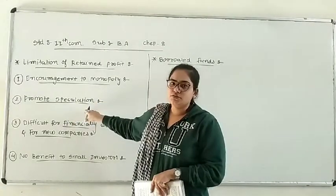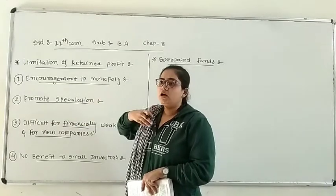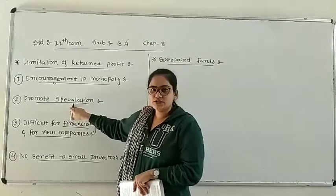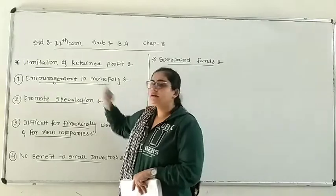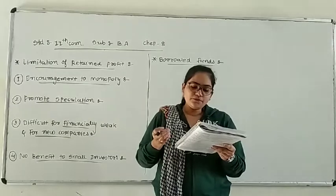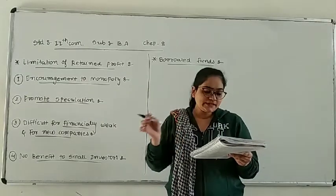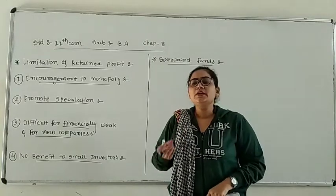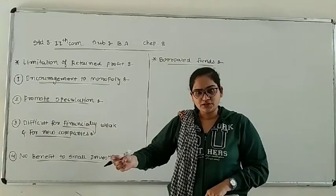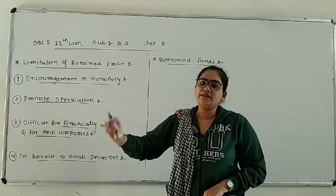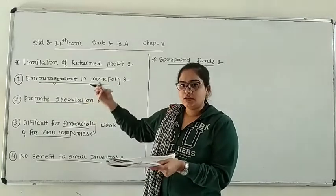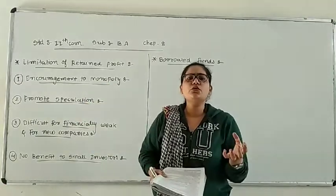Second limitation is: it promotes Speculation. Speculation means there is a limitation. Many times the manager of a business, by paying less dividend, carries excess profit to reserve funds. Sometimes the directors of the company will provide less dividend for profit — they will pay less. And as a result, they will pay less taxes.